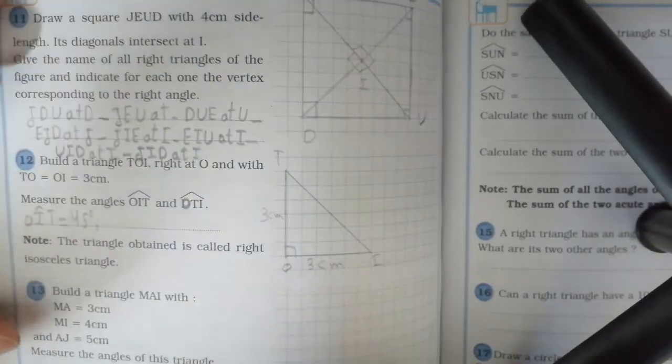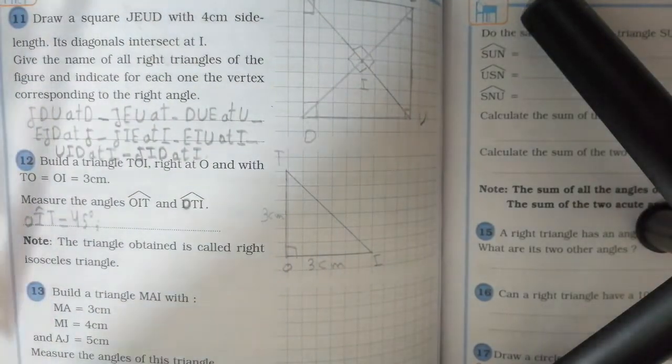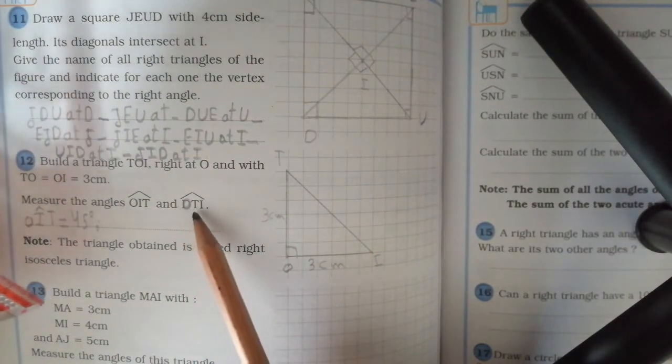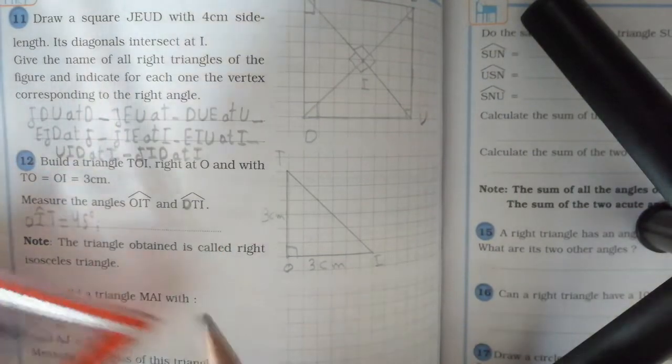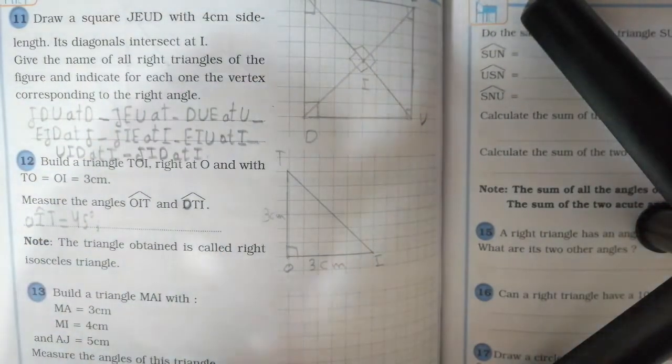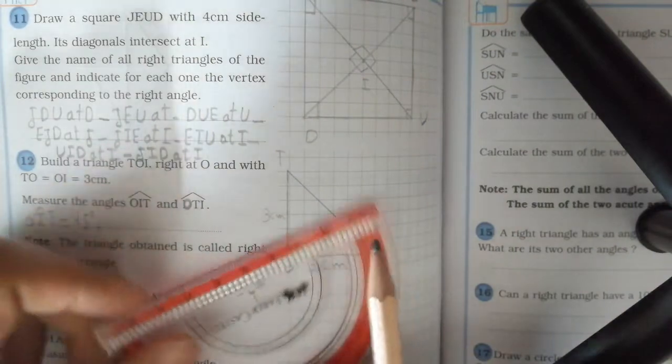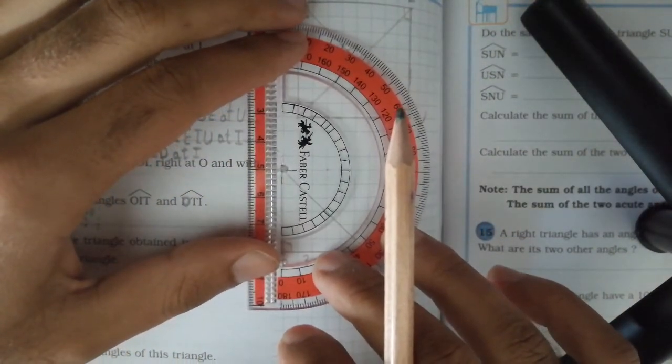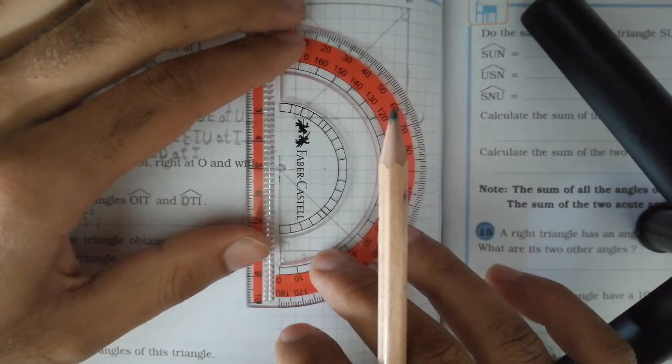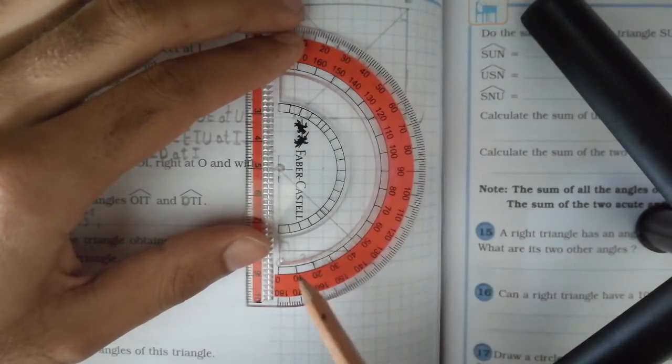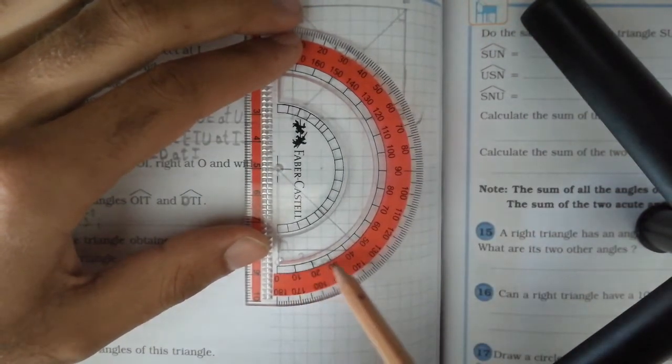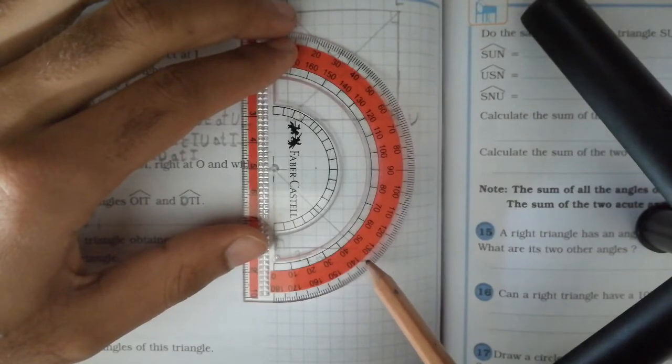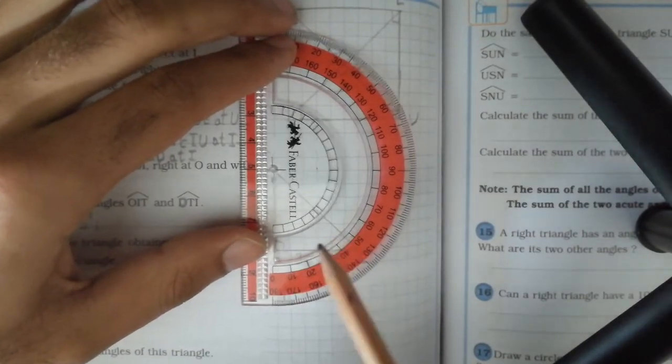Next, angle OTI with vertex T. Put the center of the protractor on point T and start from zero on side TO. We measure the angle we obtain.